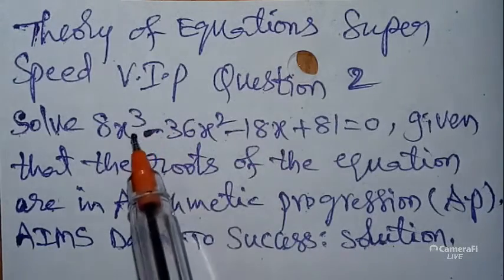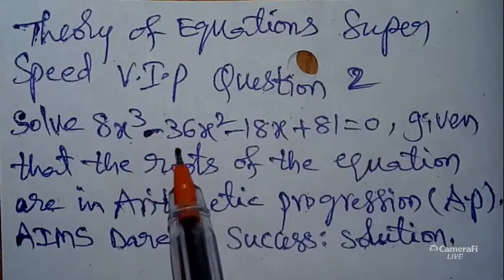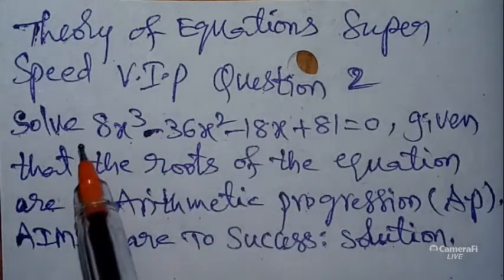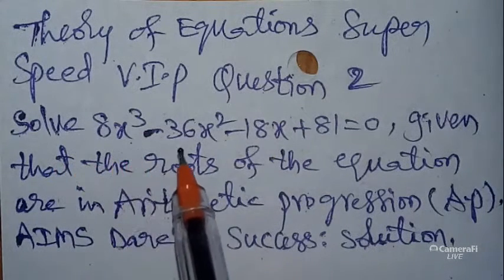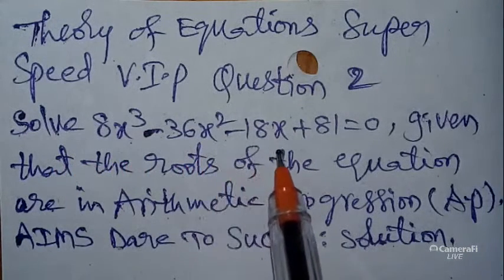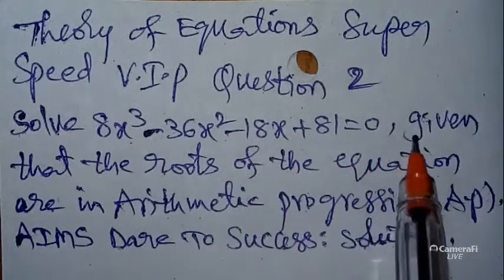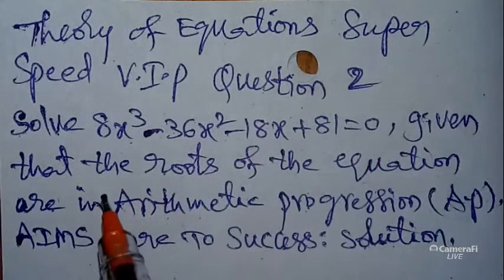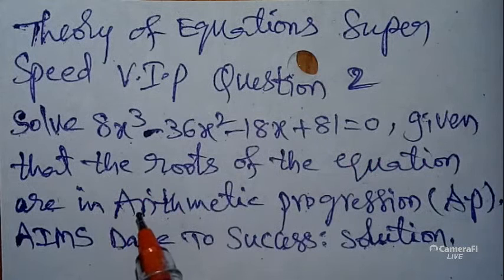VIP means very important previous question part 2. Today our question is: solve 8x³ - 36x² - 18x + 81 = 0, given that the roots of the equation are in arithmetic progression (AP).